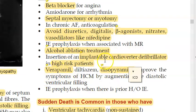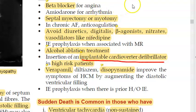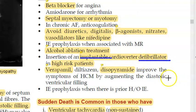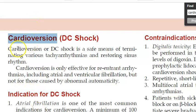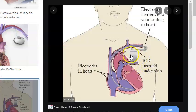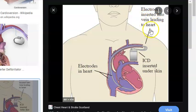For patients at risk of sudden death, an implantable cardioverter defibrillator — ICD — can be implanted. It delivers a shock to regulate the heart rhythm. The device is inserted under the skin with electrodes going via veins into the heart.